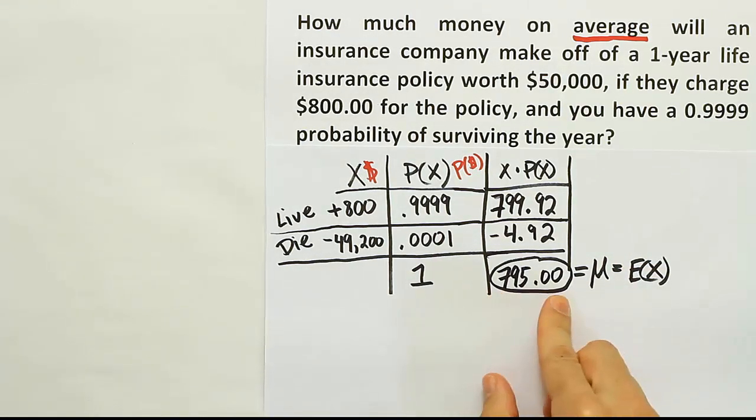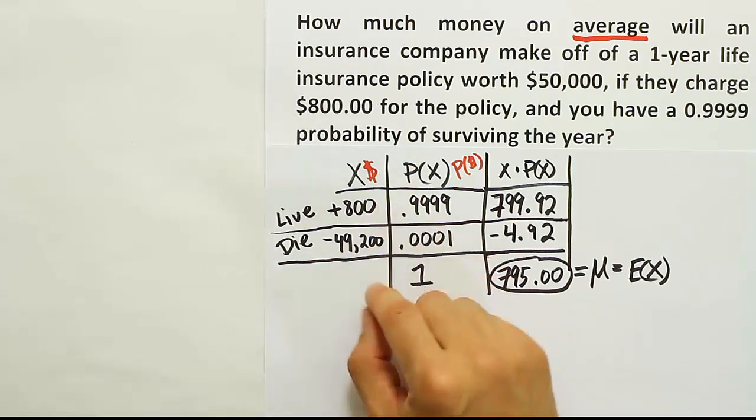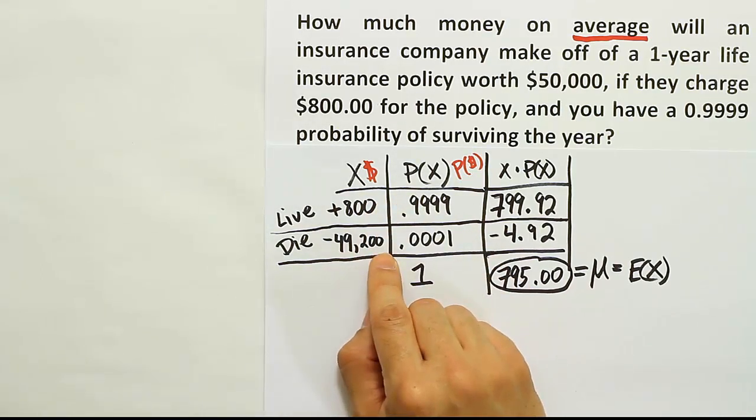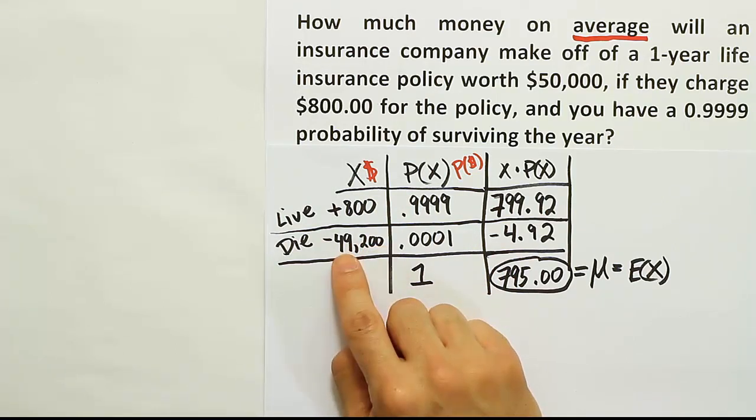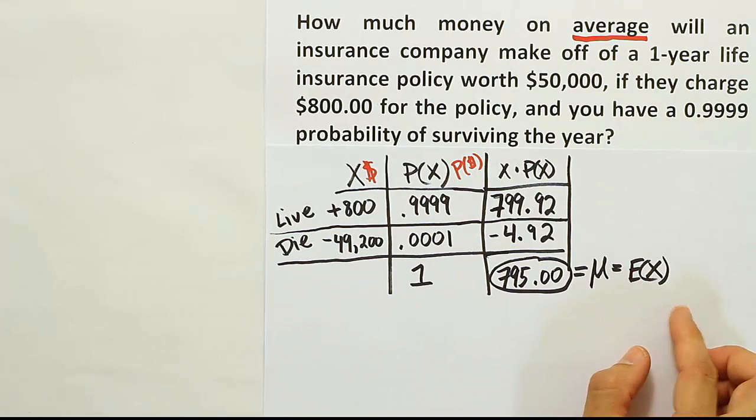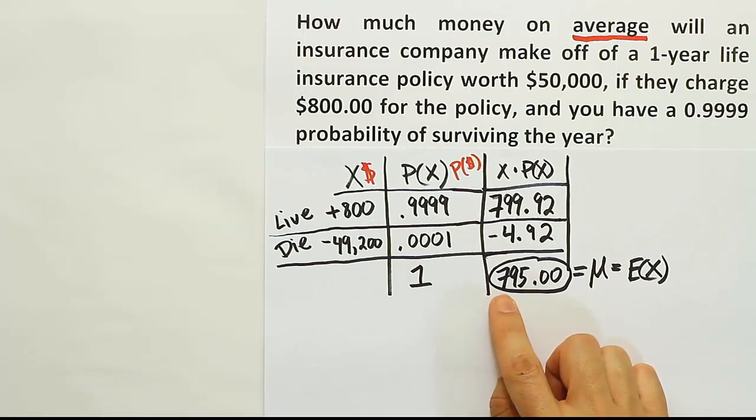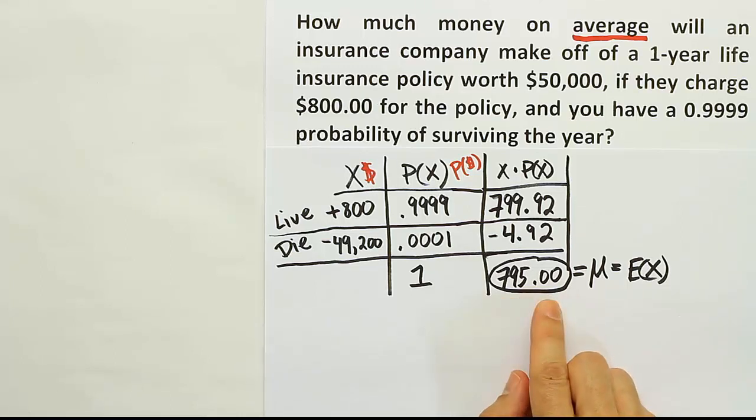So about $795 is your expected value per policy you sell. Of course, you'll never actually make $795 on a policy, right? You either make 800 or you lose $49,200 on a policy. But what happens is at the end of the year, once you look at all the money you've collected from these policies and you divided it by the number of policies sold, if you sold a lot of those policies, the number you're probably going to end up with as your average is going to be about $795.00, which means you can expect per policy you sell to bring in around $795.00. Quite a nice business.